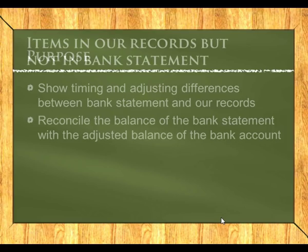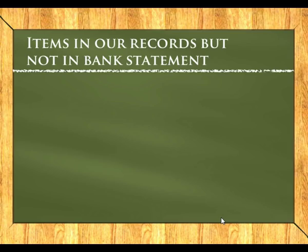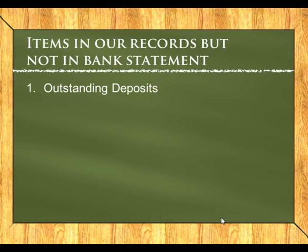Some items we find in our records but we may not be able to find them on the bank statement. In general, we have only two types of those items. The first ones being outstanding deposits — money that we have received in the business. We've been able to capture it onto our bank control account via our cash receipts, but we have not been able to go to the bank and deposit these amounts. Therefore, they would not appear on the bank statement.